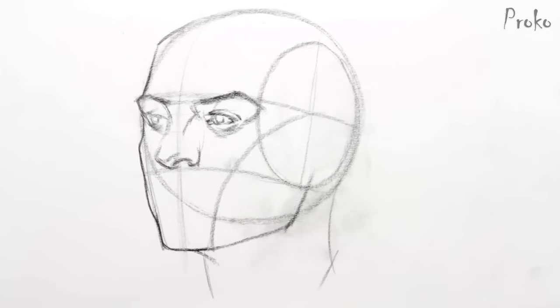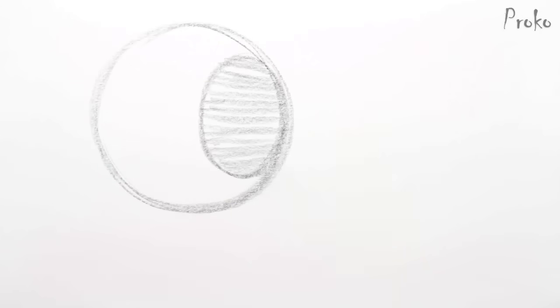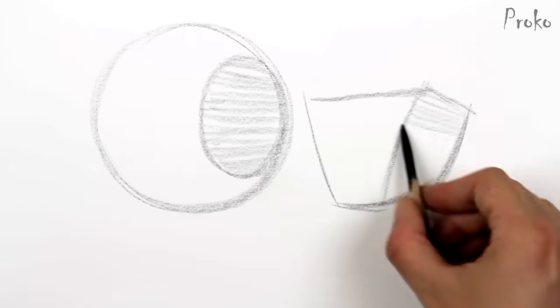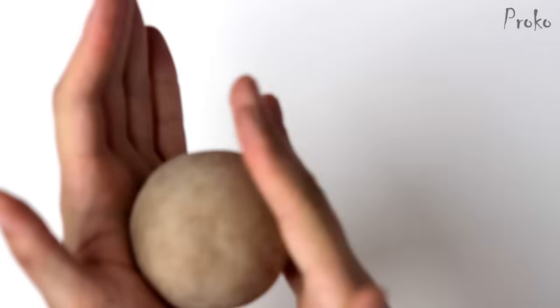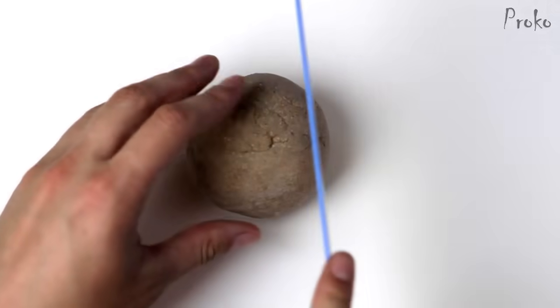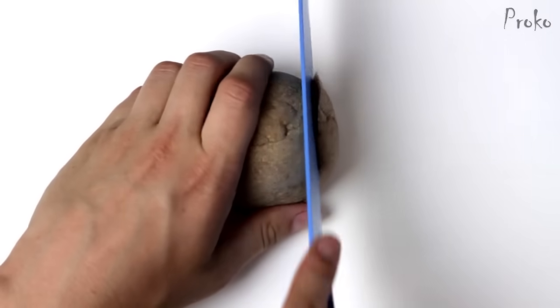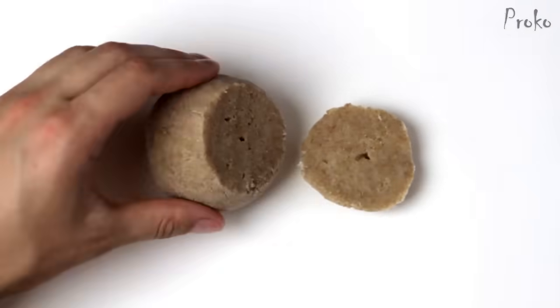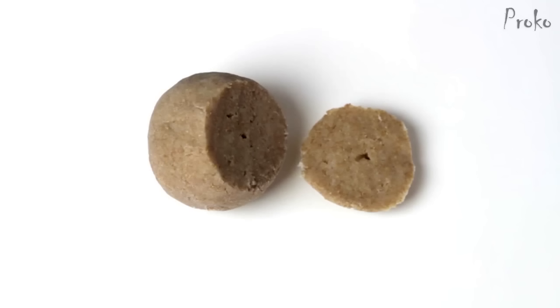If we remove the ear, lips, eyes, and nose from the head, we're left with two simple masses. The first is a ball for the cranium and the second is a boxy shape for the jaw. The cranium is spherical but with the sides flattened, so chopping off a slice from both sides of that ball gets us a simplified but close representation of the cranium mass.